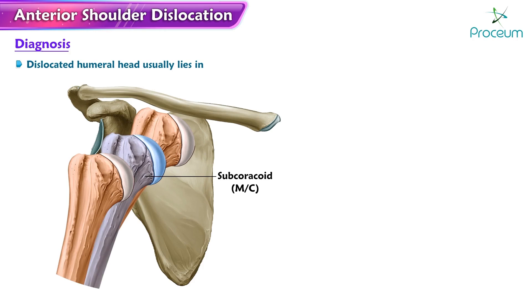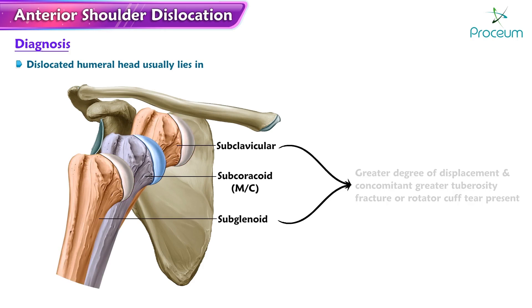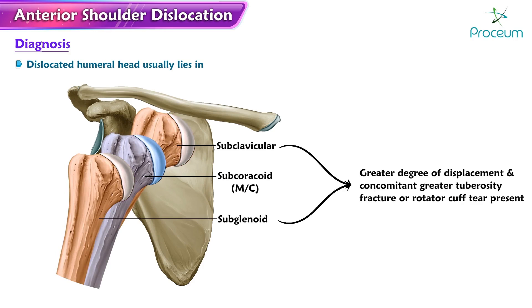If the humeral head is subclavicular or subglenoid, there has been a greater degree of displacement, and a concomitant greater tuberosity fracture or rotator cuff tear is usually present.